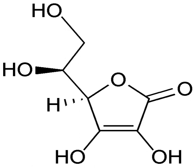Substances that have the ability to reduce other substances — causing them to gain electrons — are said to be reductive or reducing, and are known as reducing agents, reductants, or reducers. The reductant transfers electrons to another substance, and is thus itself oxidized. Because it 'donates' electrons, the reducing agent is also called an electron donor. Electron donors can also form charge transfer complexes with electron acceptors.